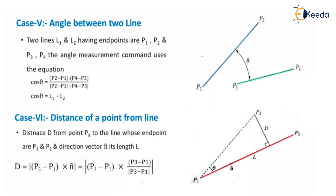Next case: angle between two lines. Two lines l1 and l2 have endpoints p1, p2 and p3, p4 respectively. The angle measurement uses the equation: cos θ = (p2 − p1)·(p4 − p3) / (|p2 − p1| · |p4 − p3|). That means cos θ equals the dot product of the l1 direction and the l2 direction.